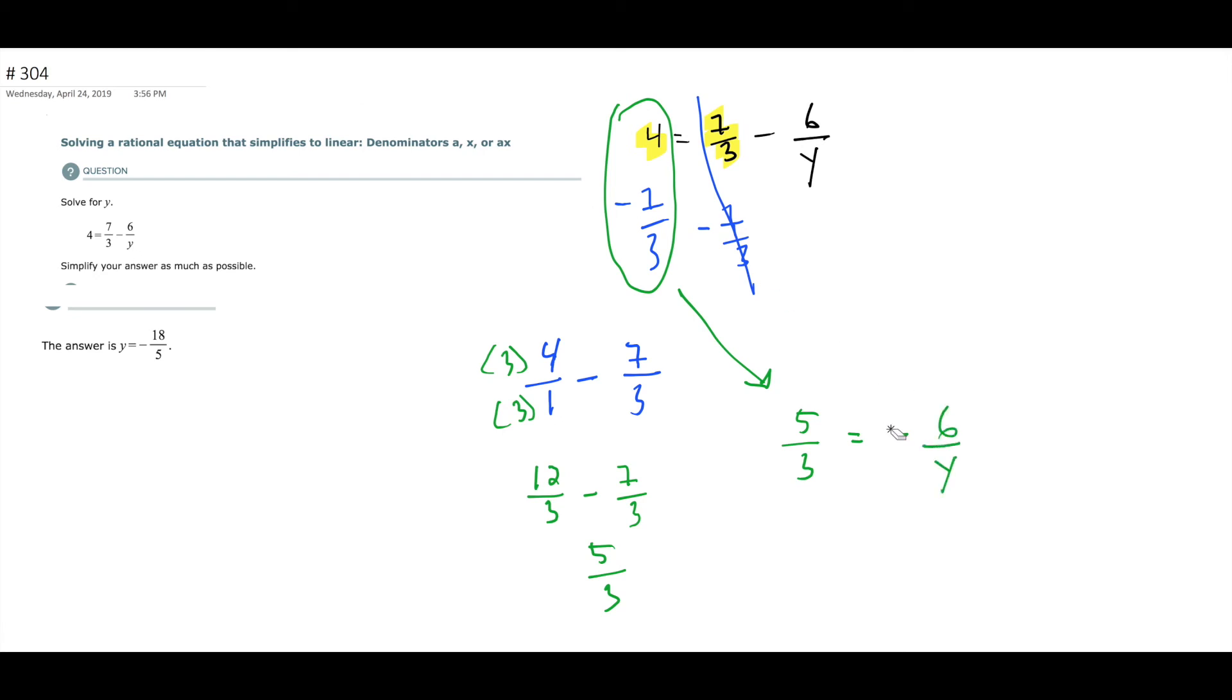All right, and if you have a negative next to the number, you can just move it to the top right there. All right, cross multiply, what do you get? Because there's an equal sign, so you can go like that, and then you can go like that.